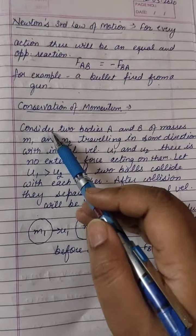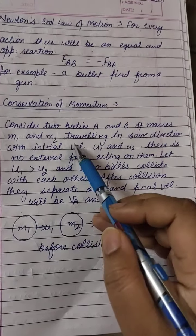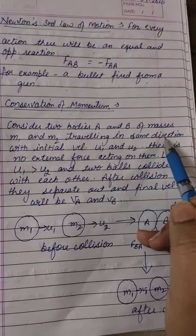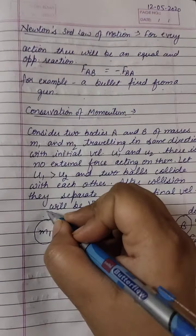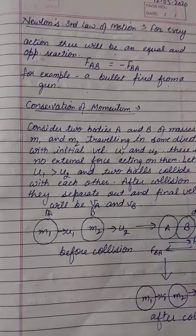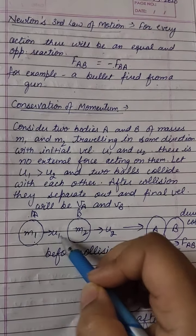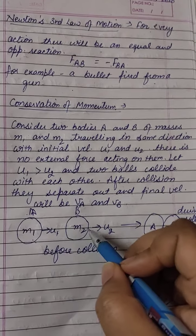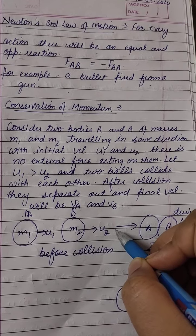Now let's start with conservation of momentum. Consider two bodies A and B of masses M1 and M2 traveling in the same direction. First, we have two bodies A and B. Body A has mass M1, body B has mass M2. Body A moves with initial velocity U1 and body B moves with initial velocity U2.